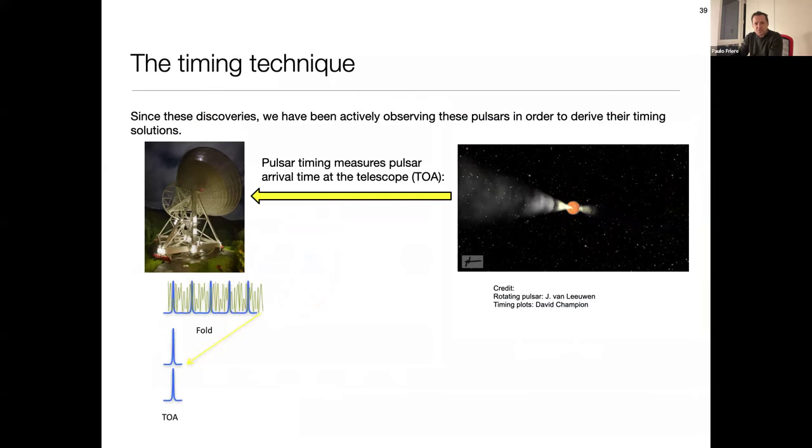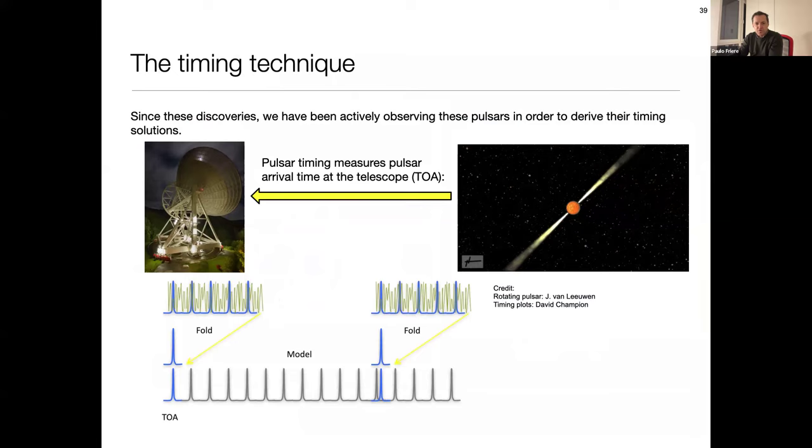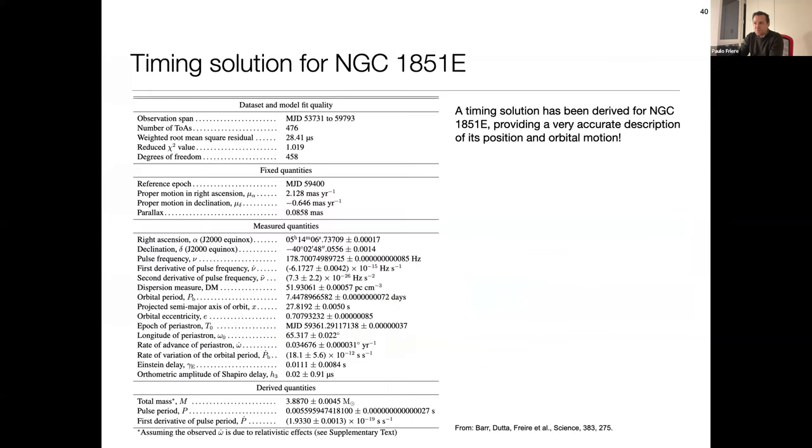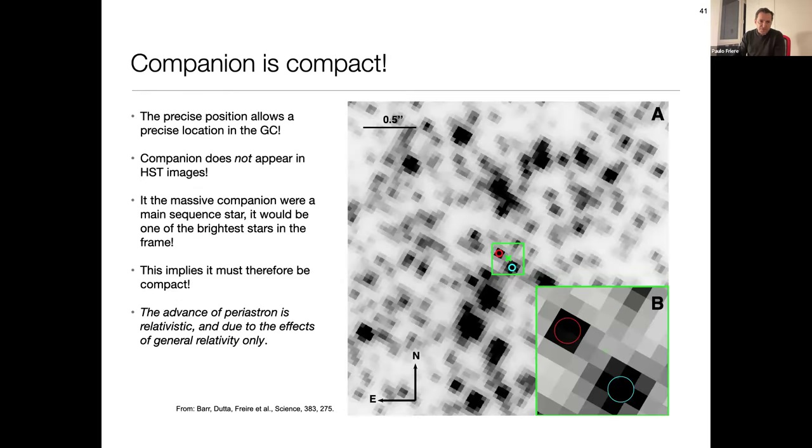So, what we did with this system is that we did the usual timing technique. So, we established a timing model. You keep taking data. You keep perfecting this model. At some point, we got a unique solution. And this unique solution is here. It's published. This was a bit of work because Meerkat doesn't give us much time. So, to get timing solutions, sometimes it's a bit challenging. From this timing solution, from all these numbers, it's typical in pulsar timing. We have a lot of precision here. I like to focus on two sets of numbers. One of them is the position of the pulsar, right ascension. And the other one, the precession of periastron. These are the most important numbers in this paper.